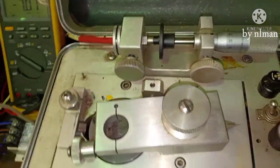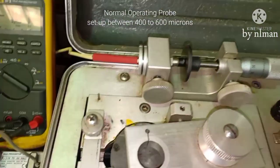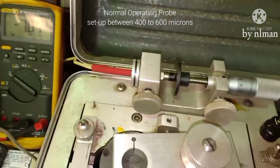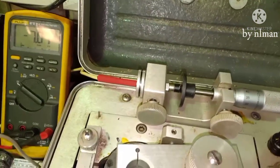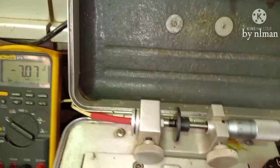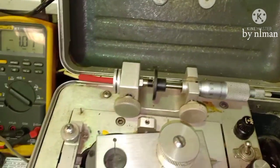So this is how to check the probe. The output of that one should be linear, and normally the probe is set between 400 to 600 microns, okay guys.